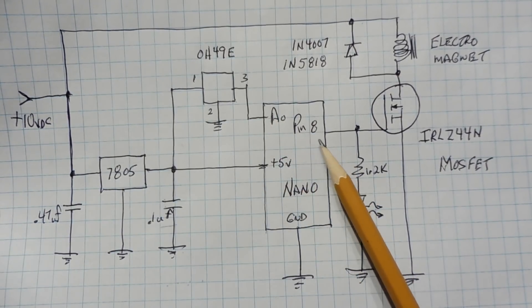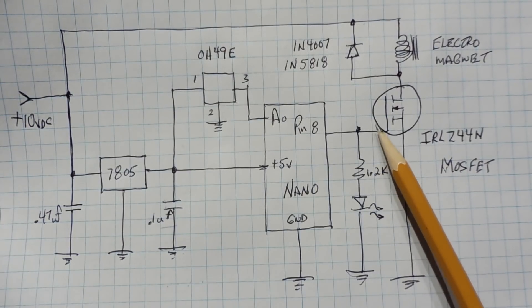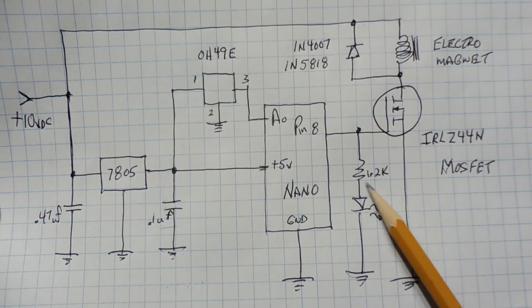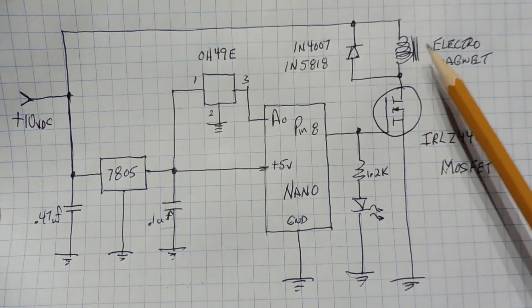Now the output pin 8, the GPIO output, is driving the gate of the MOSFET, which is turning on and off the MOSFET. Also have an LED on the gate to indicate gate drive, so we can actually tell when there's gate drive to the MOSFET, which is energizing the electromagnet.